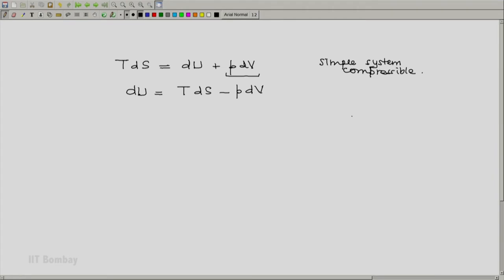Now notice dU being the differential of a property is an exact differential. And that means on the right-hand side also we must have an exact differential. So the right-hand side must be the differential of two variables. There are four here, but we can select say two. We can select here either S and V, or we can select T and P, but let us write S and V.